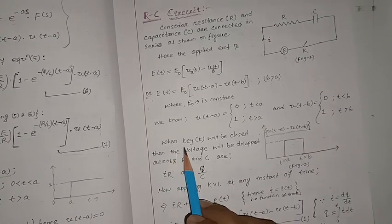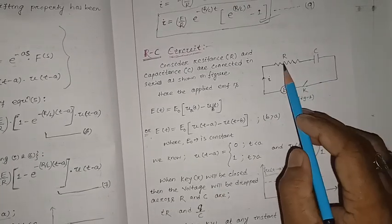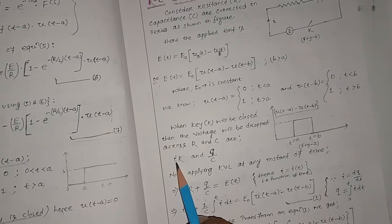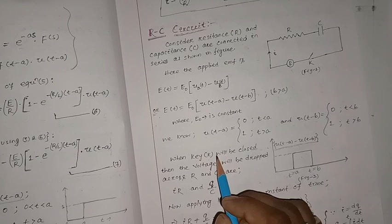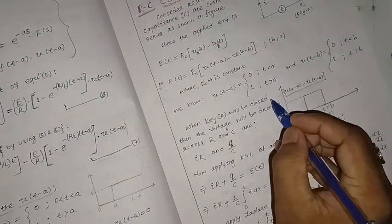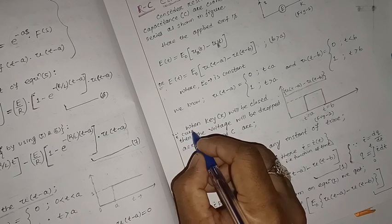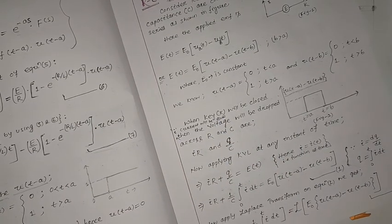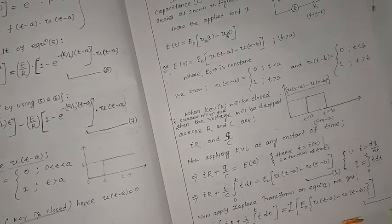When the key is closed, voltage drops across R and C. The voltage drop across the resistor of resistance R is iR. When the key is closed, current i flows through the circuit and voltage drops across R and C. The voltage drop across the capacitor is Q/C, since we know that capacitance C equals Q/V, so V equals Q/C.